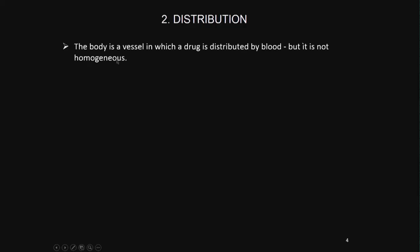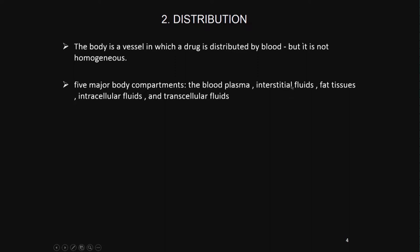Distribution: the body is like a big vessel containing a lot of water. The drug gets distributed, but it is not uniform because you have plasma, other tissues, intestinal fluids, fat tissues, intracellular fluids, and transcellular fluids. Some drugs will get distributed only in the plasma; if it is highly lipophilic it may get absorbed in the tissue. The volume of distribution may change depending upon the type of drug, and the maximum concentration in the plasma depends on the volume of distribution — higher volume of distribution means lower maximum concentration, and vice versa.